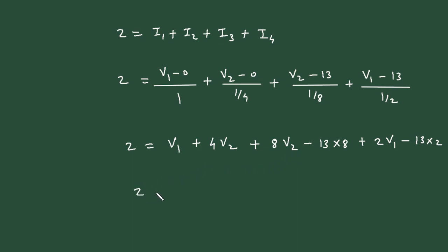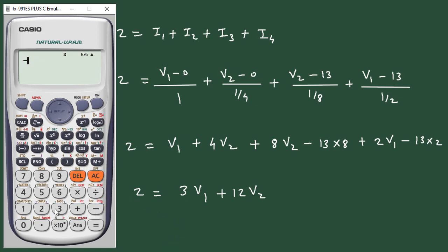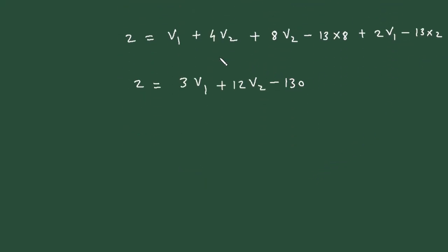Simplifying: collecting V1 terms gives 1V1 plus 2V1 equals 3V1; collecting V2 terms gives 4 plus 8 equals 12V2. So 2 equals 3V1 plus 12V2 minus 13 times 8 minus 13 times 2, which gives minus 130. Moving minus 130 to the left side: 2 plus 130 equals 132, so 132 equals 3V1 plus 12V2.